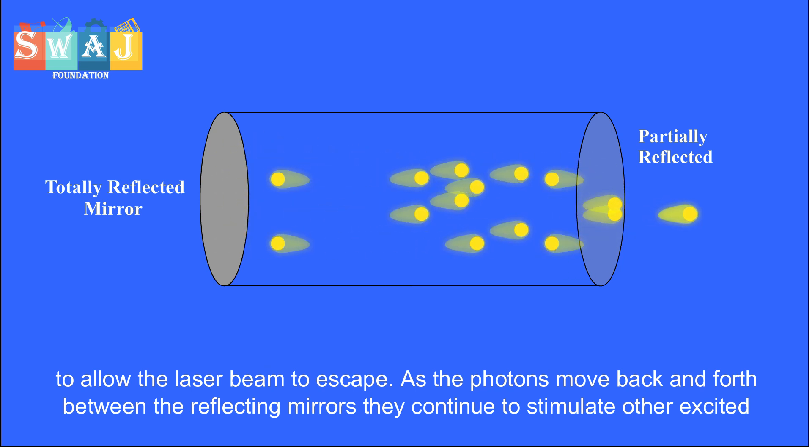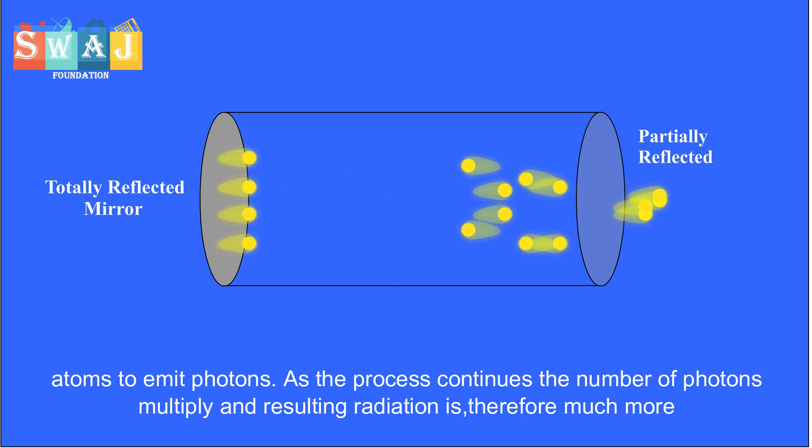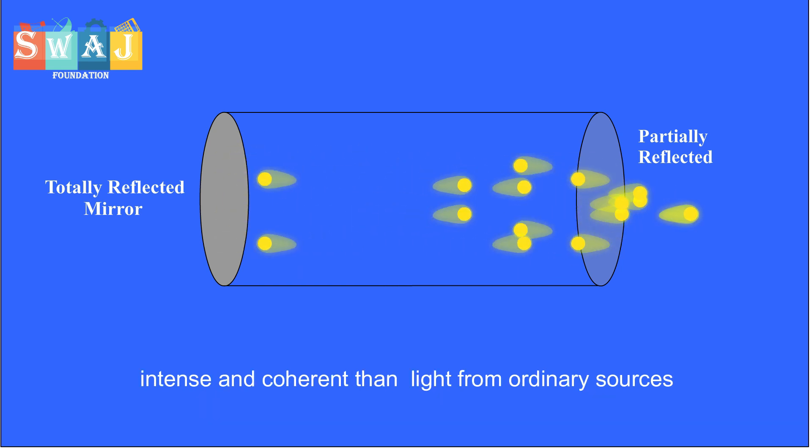As the photons move back and forth between the reflecting mirrors, they continue to stimulate other excited atoms to emit photons. As the process continues, the number of photons multiplies and the resulting radiation is therefore much more intense and coherent than light from ordinary sources.